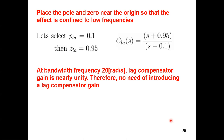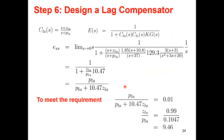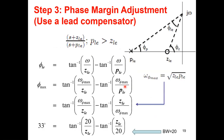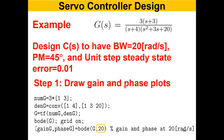Student clarification: Is the 0.01 value the required steady state error? Yes, that is what is given. The problem states: design a compensator to have bandwidth 20 rad/s, phase margin 45 degrees, and unit step steady state error of 0.01. We want to design the plant to achieve this - that is where the error requirement comes from.